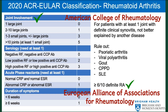The first parameter assessed is joint involvement — whether it's one large joint involved or two to ten large joints. The second parameter is serological markers, which are basically two: the anti-cyclic citrullinated peptide (anti-CCP) and the rheumatoid factor. So these are the two serological markers used in this classification.